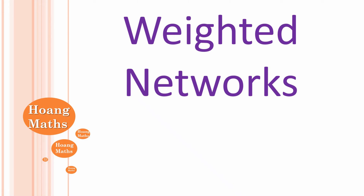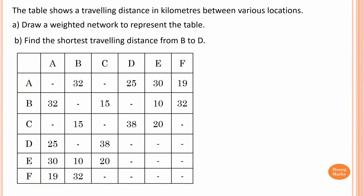If you can, please download or print out the PDF file in the description below so you can work with me. First one: the table shows a traveling distance in kilometers between various locations. Part A: draw a weighted network to represent the table.